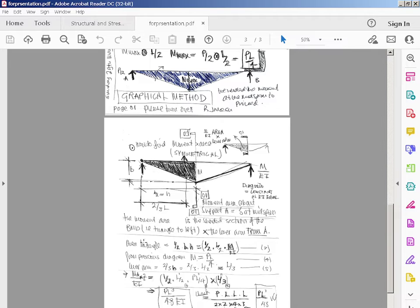So the area of the triangle equals half times L over 2 times M over EI. As above, M equals PL over 4, so the area of the triangle equals PL squared divided by 16 EI.